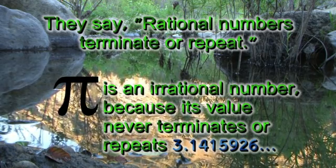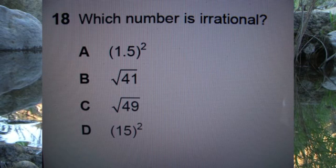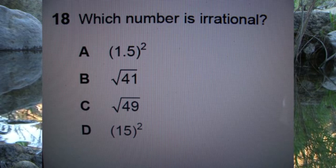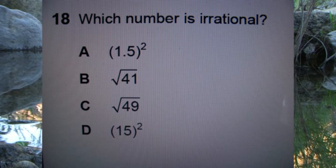Let's look at a test question. Which number is irrational? A: 1.5 squared, B: the square root of 41, C: the square root of 49, or D: 15 to the second power.